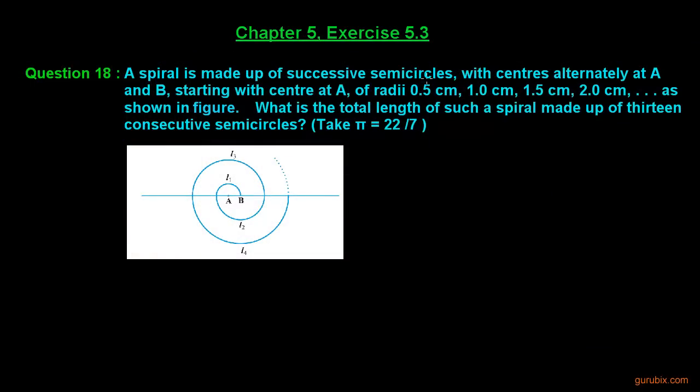This is question number 18 of exercise 5.3 of chapter 5. A spiral is made up of successive semicircles with centers alternately at A and B, starting with center A of radius 0.5 centimeter, 1 centimeter, 1.5 centimeter and 2 centimeter as shown in the figure.